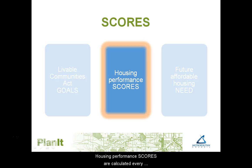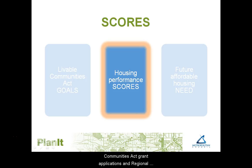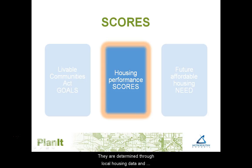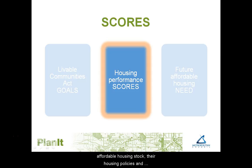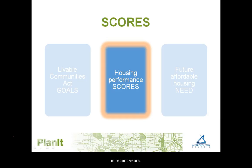Housing performance scores are calculated every year and used in the evaluation of Livable Communities Act grant applications and regional solicitation for transportation funds. They are determined through local housing data and surveys sent to cities each year to assess the level of city support and engagement in the production and preservation of affordable housing. Scores consider a community's existing affordable housing stock, their housing policies and programs, and any new or preserved affordable housing in recent years.